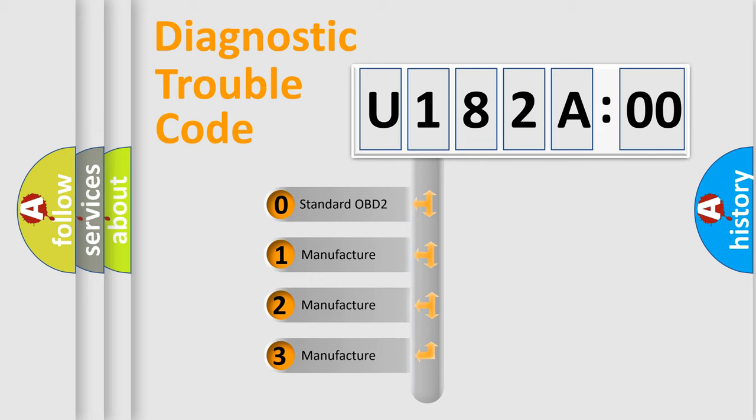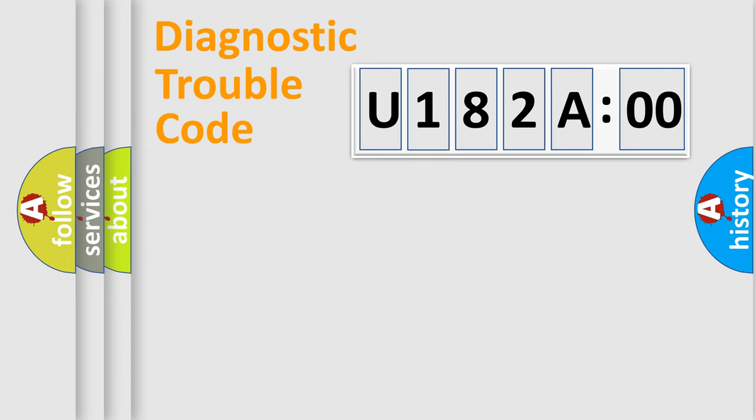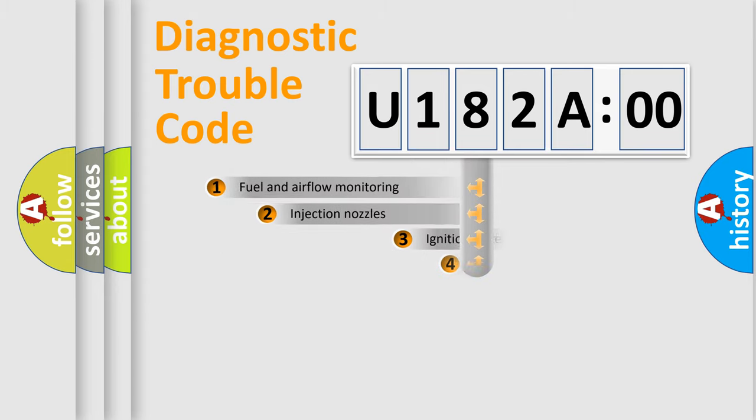If the second character is expressed as zero, it is a standardized error. In the case of numbers 1, 2, or 3, it is a more specific expression of the car-specific error.